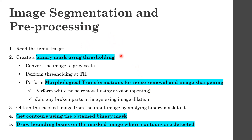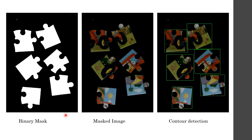In the first stage of image segmentation and preprocessing, I read the input image and create a binary mask using thresholding. The threshold value is 220, so all pixel values greater than 220 are assigned 0 and the rest are assigned 1. I then perform morphological transformations such as erosion and dilation to remove white noise and sharpen the image. Using this binary mask I obtain the masked image, then detect contours and draw bounding boxes on the masked image where contours are found.